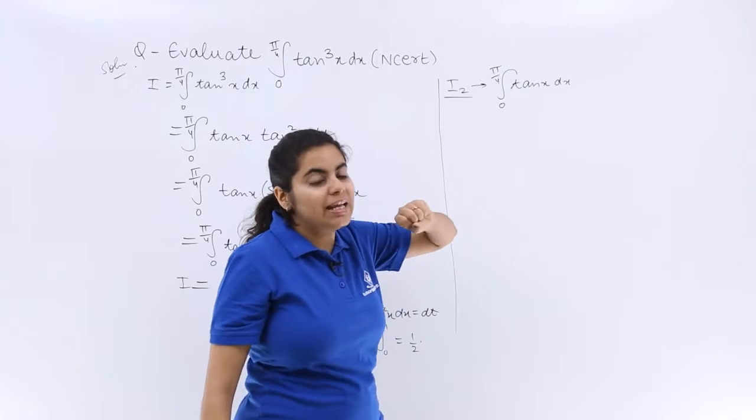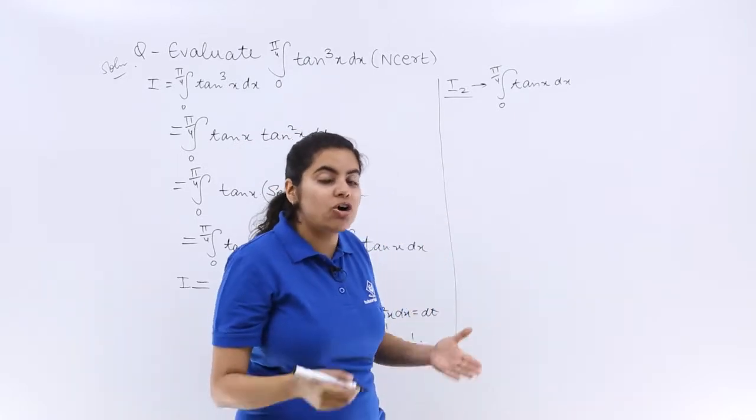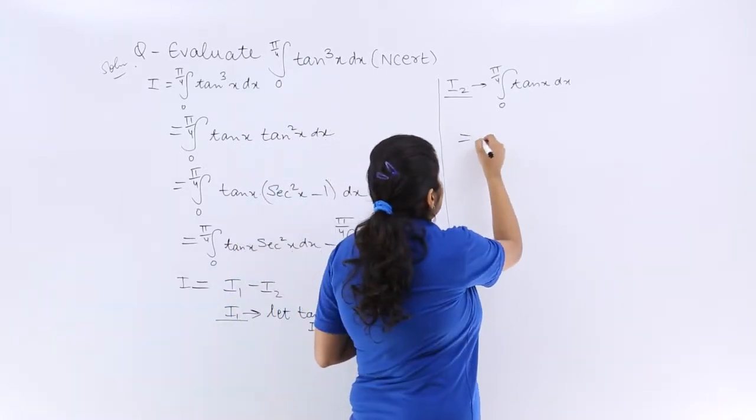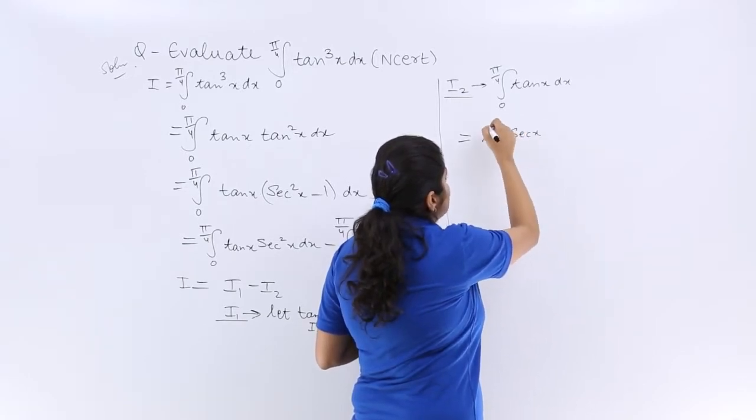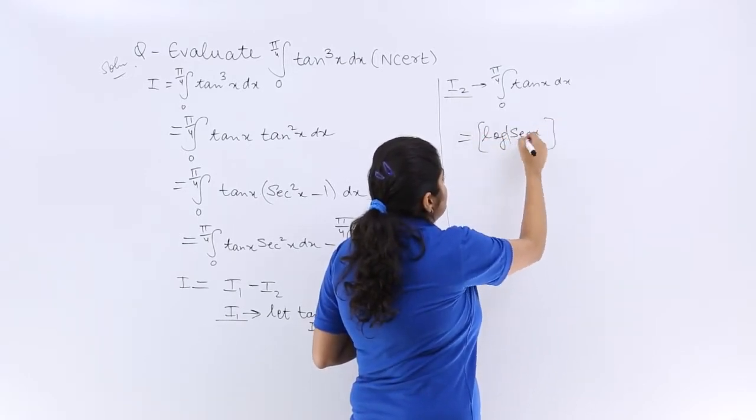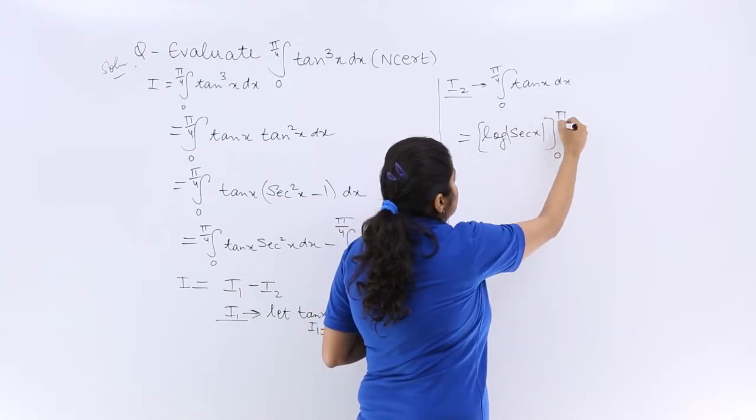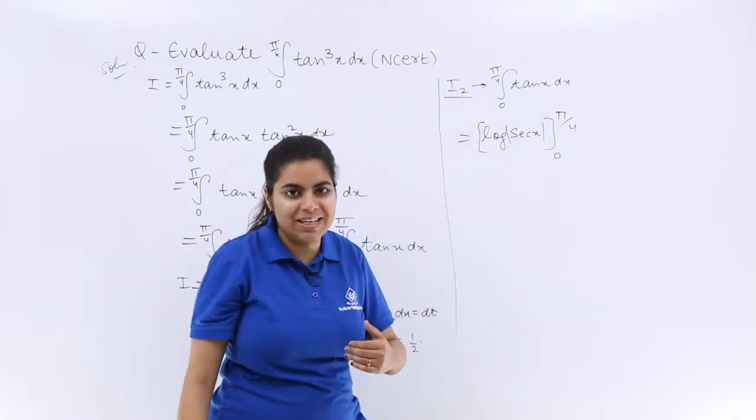Now what is the integration of tanx? It is -log(cosx) or log(secx). So I write log(secx), and directly I can go about putting the limits.